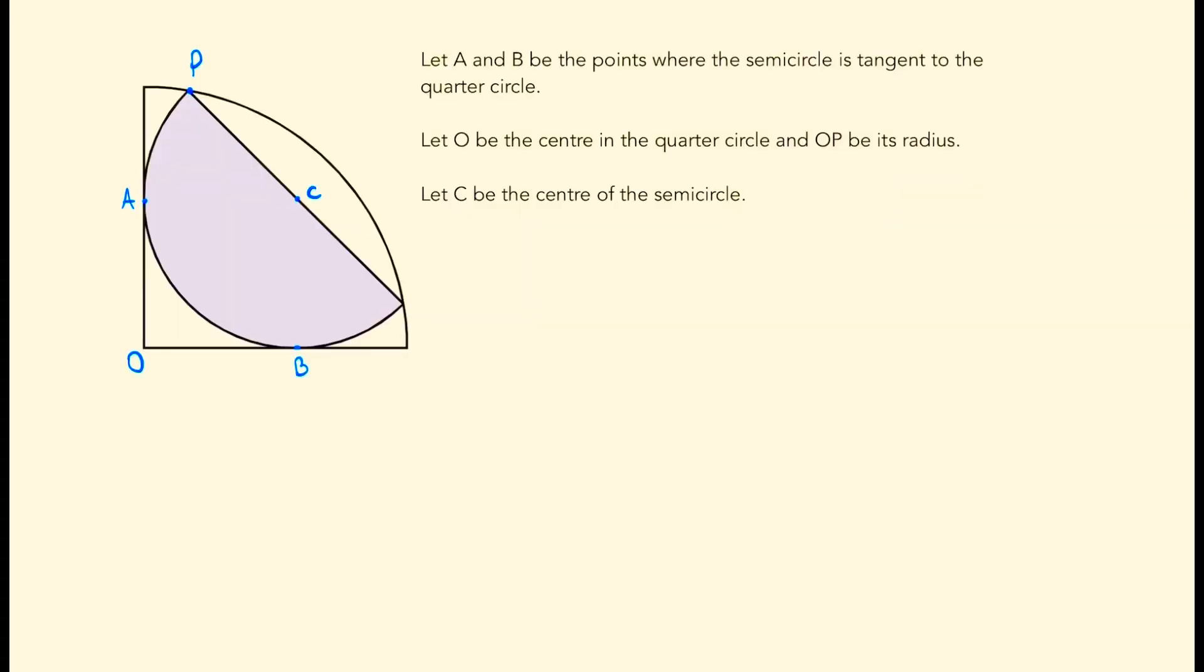To begin this problem, we'll say that A and B are the points such that the semicircle and the quarter circle are tangent to one another. We'll say that O is the centre of the quarter circle and OP will be its radius. And we'll say C is the centre of the semicircle. So C to P and A to C will be the radius of the semicircle.